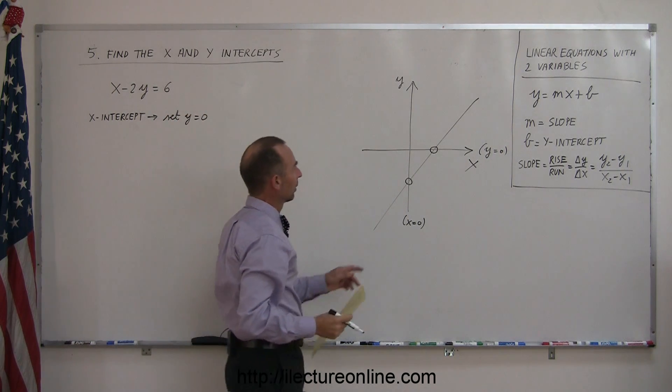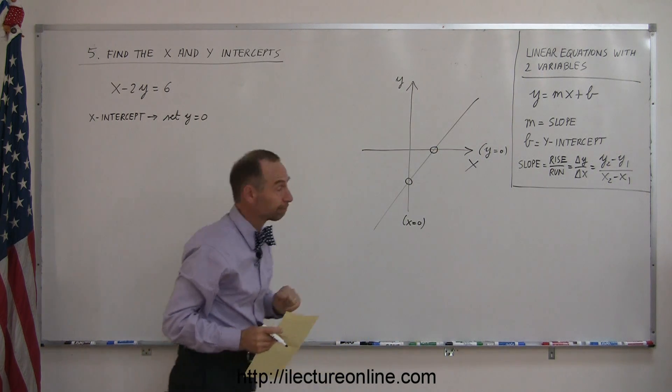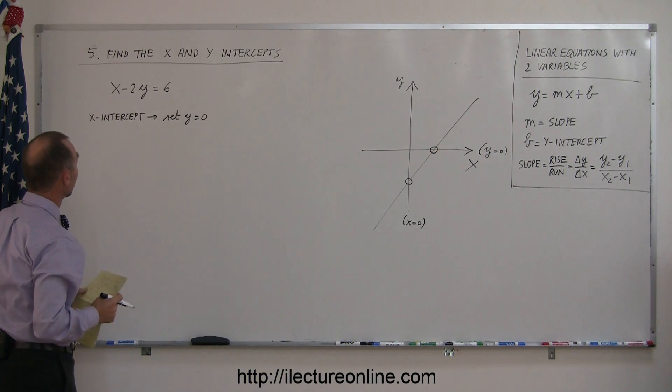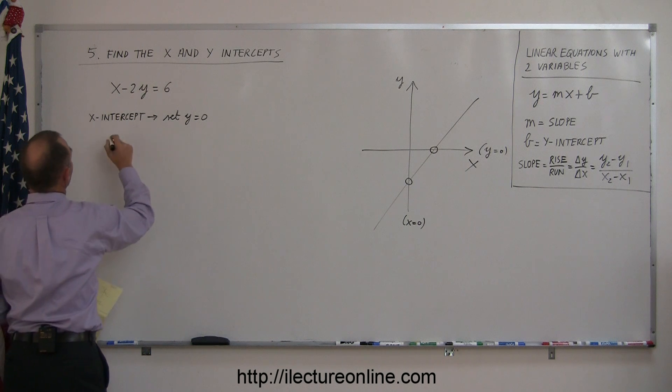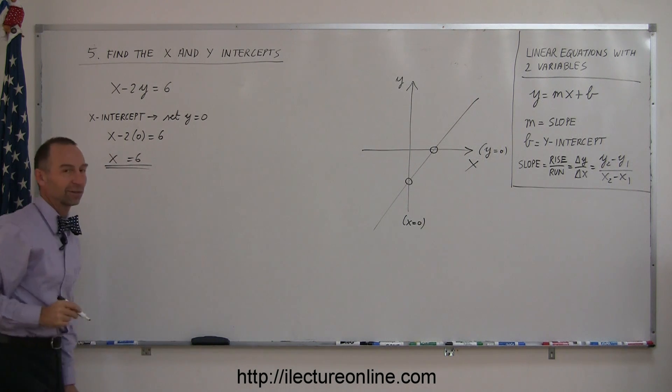Remember, wherever we cross the x-axis, the y-value is zero at that point. So, set y equal to zero. I get x minus 2 times zero equals 6, or x equals 6. There it is. There's the x-intercept.